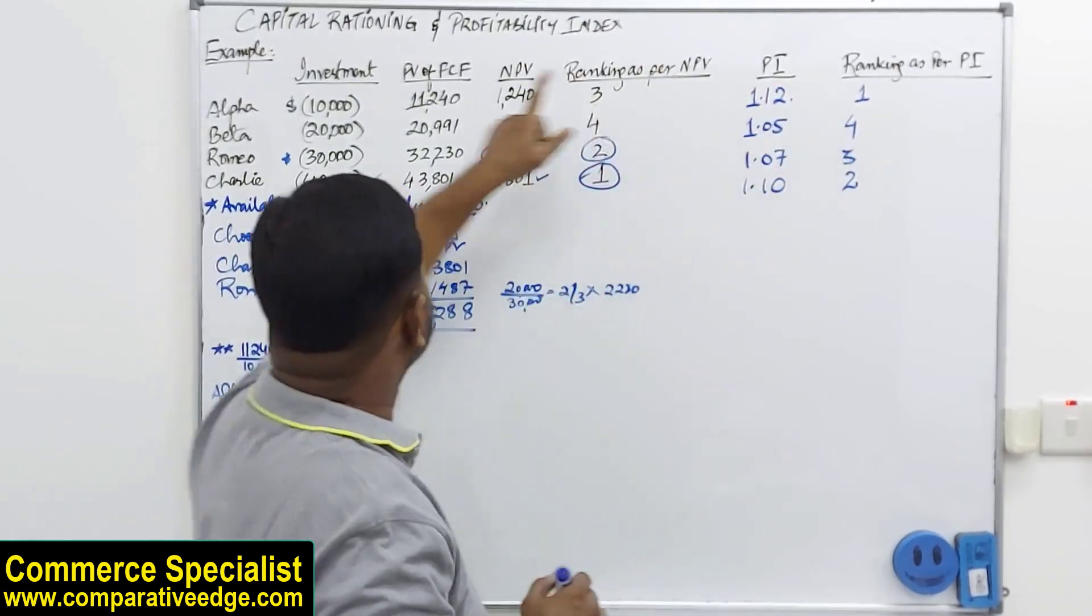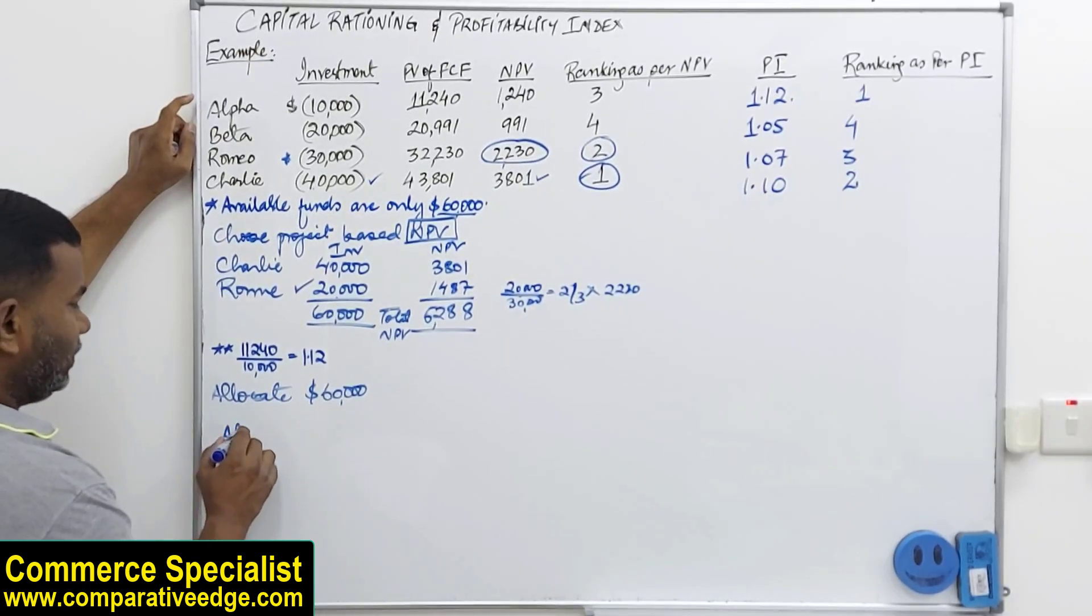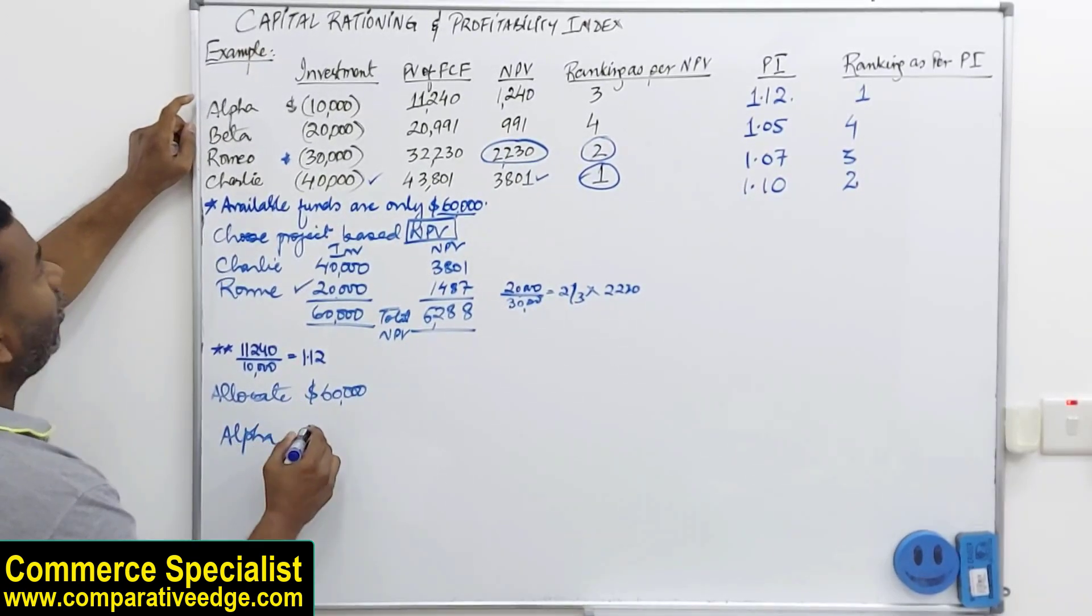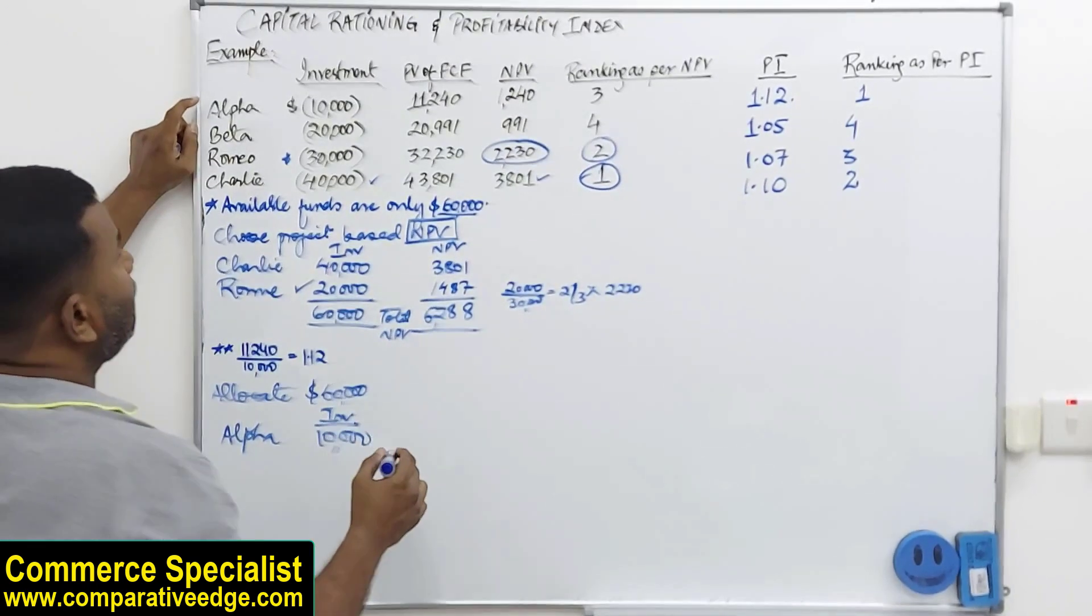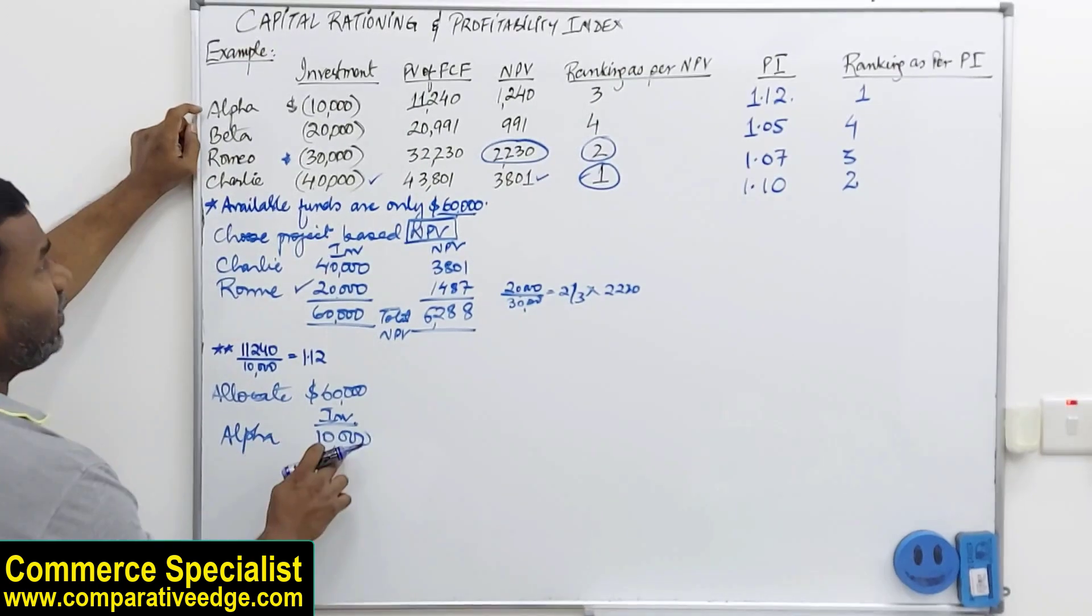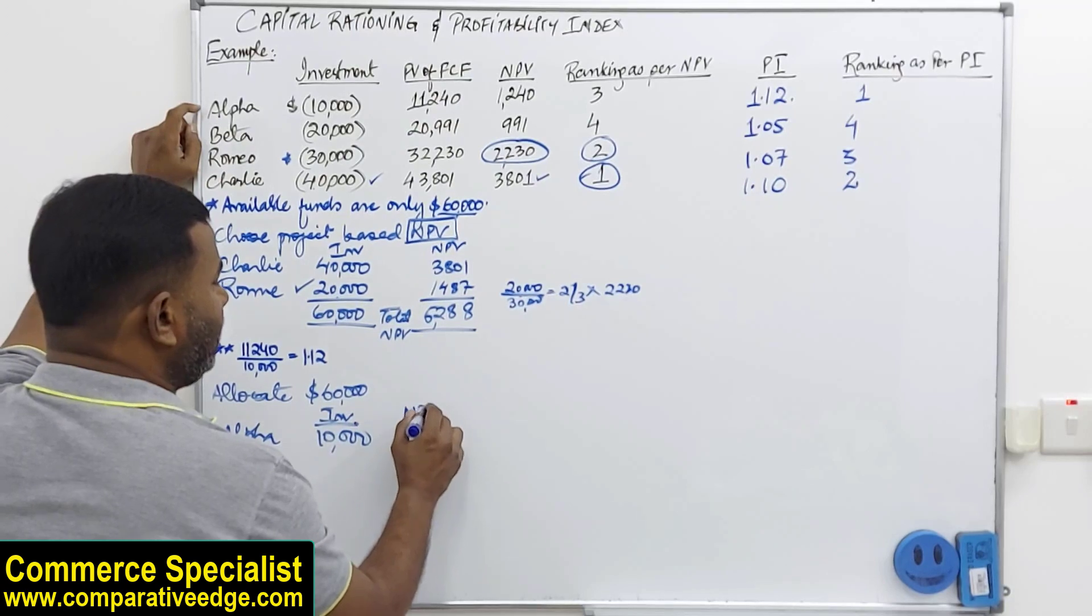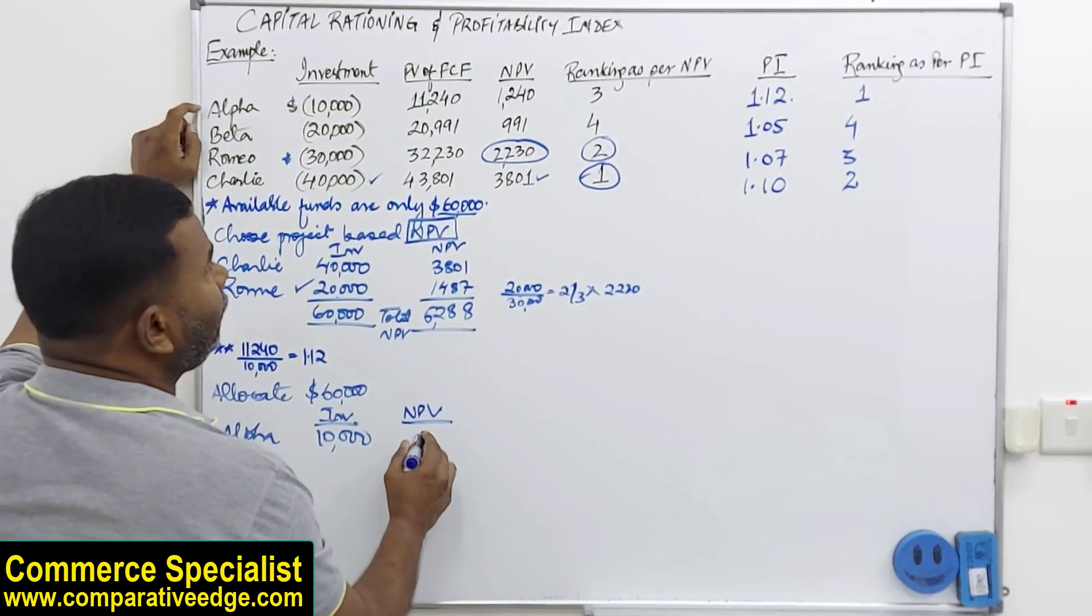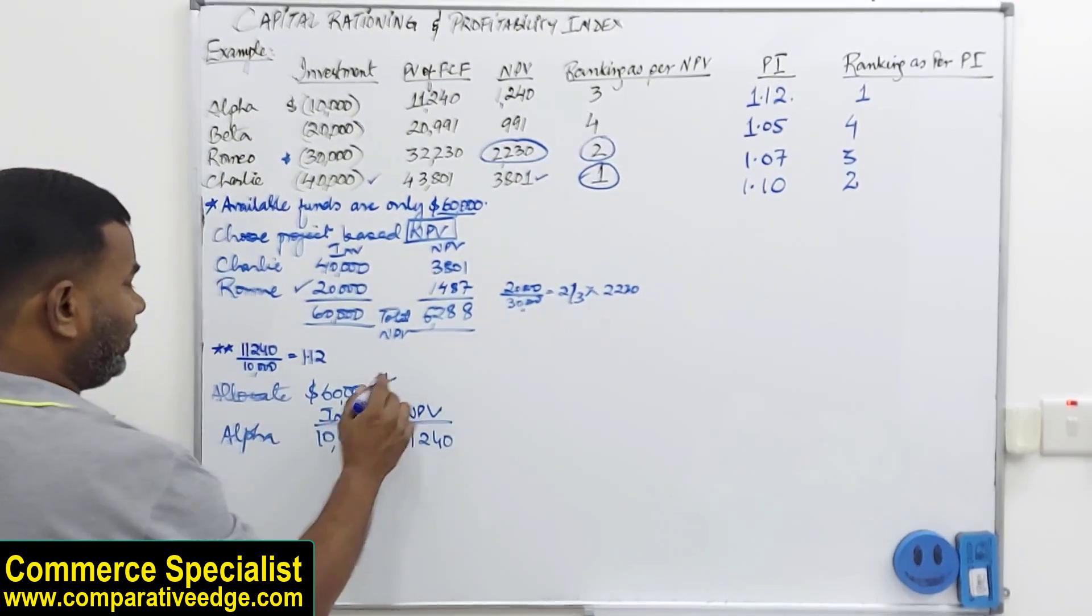So if I try to allocate the existing funds of 60,000 and I invest according to this ranking, my very first choice is Alpha. So I will take Alpha, which requires an investment of 10,000. This is the investment.